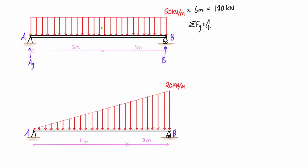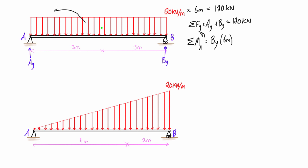The sum of forces in the y-direction gives us A_y plus B_y equals 120 kilonewtons, since the object is in static equilibrium. For the sum of moments about A, defining counterclockwise as positive, B_y causes a positive moment — its magnitude times 6 meters. The distributed load would cause rotation in the negative direction.